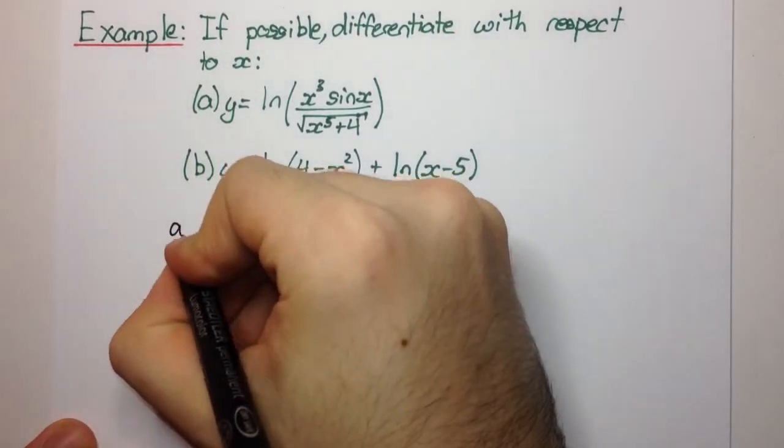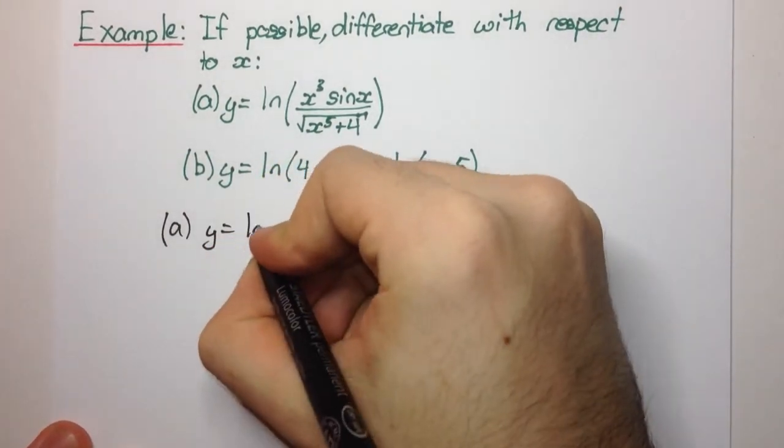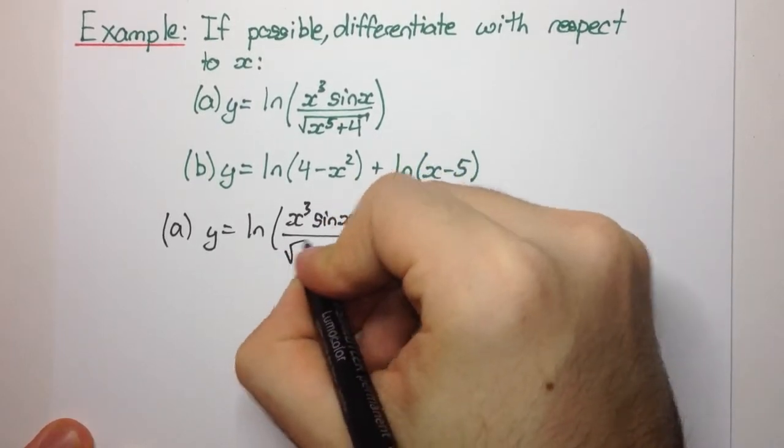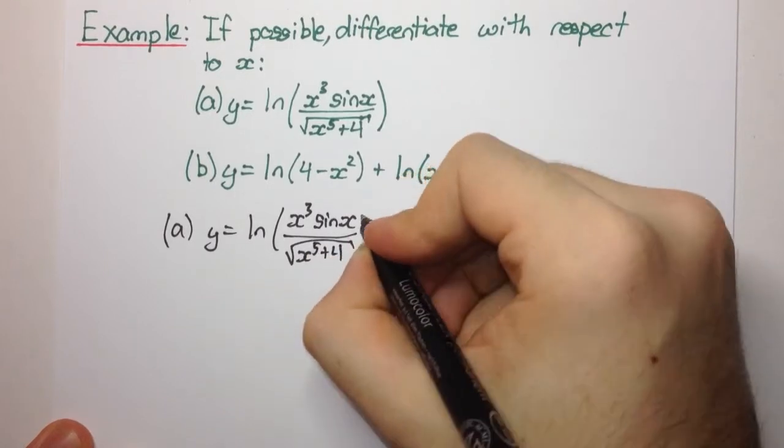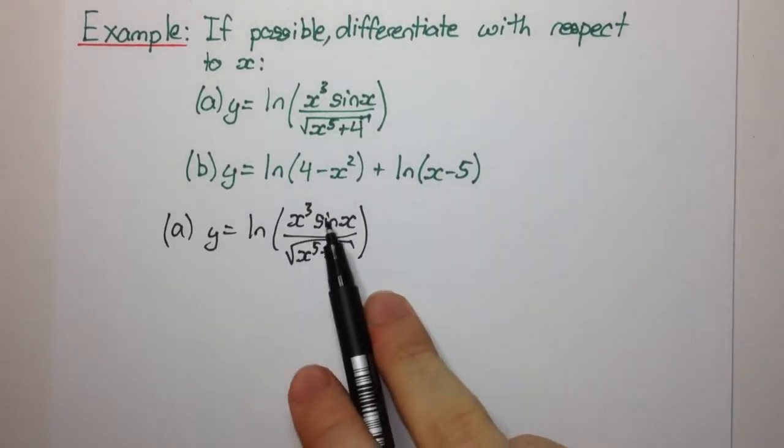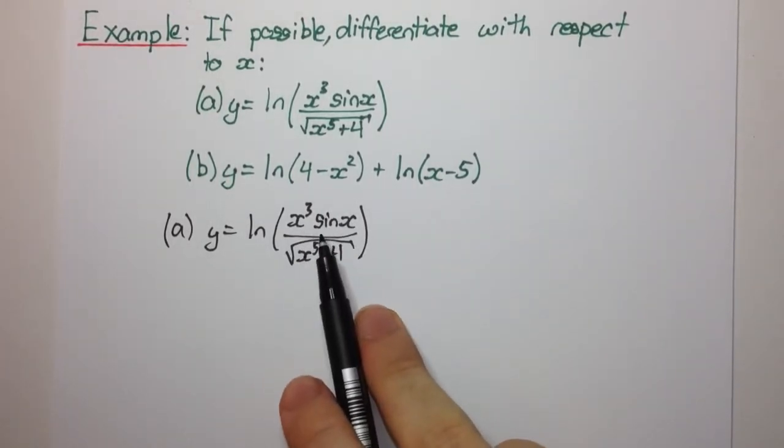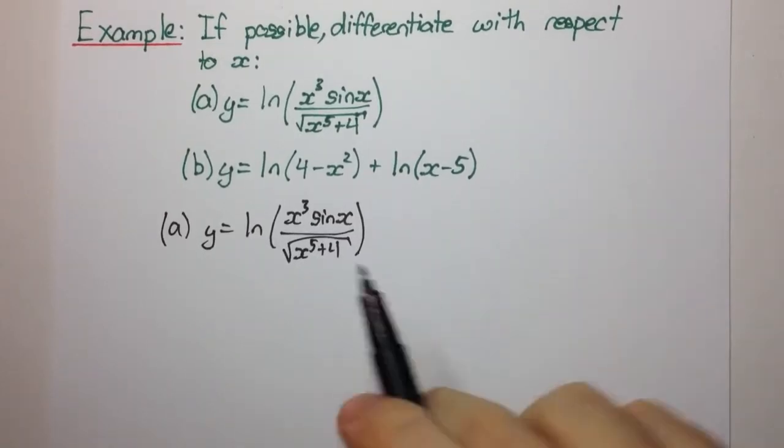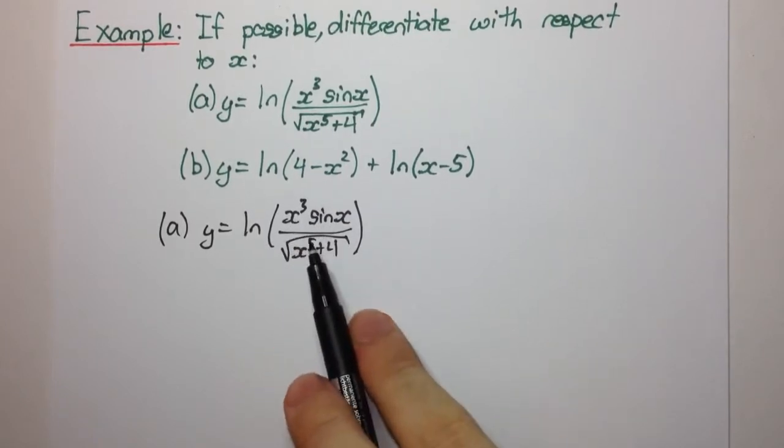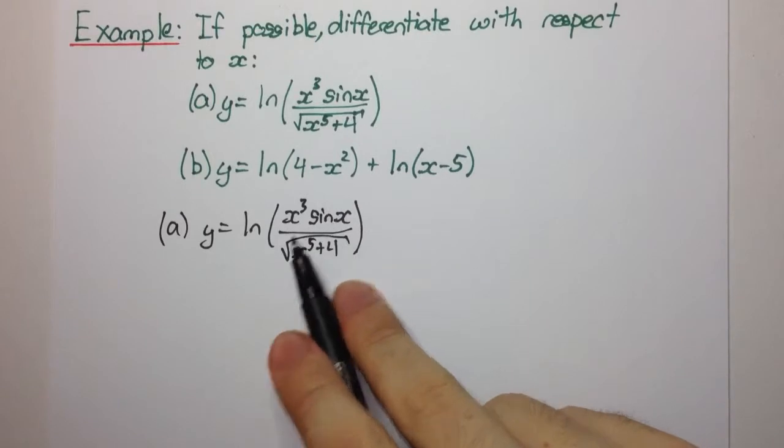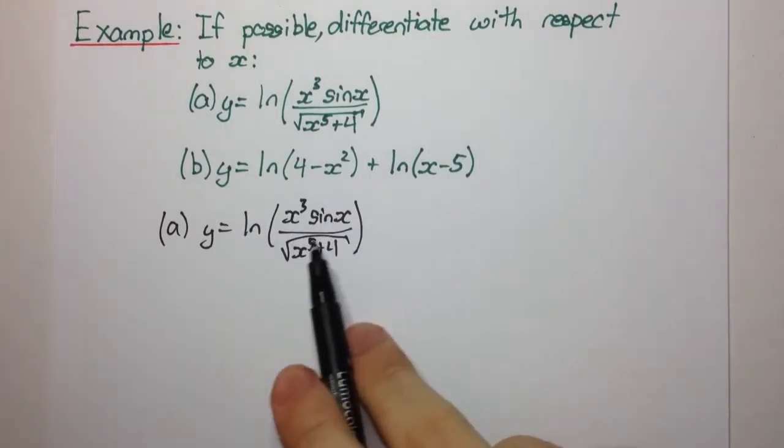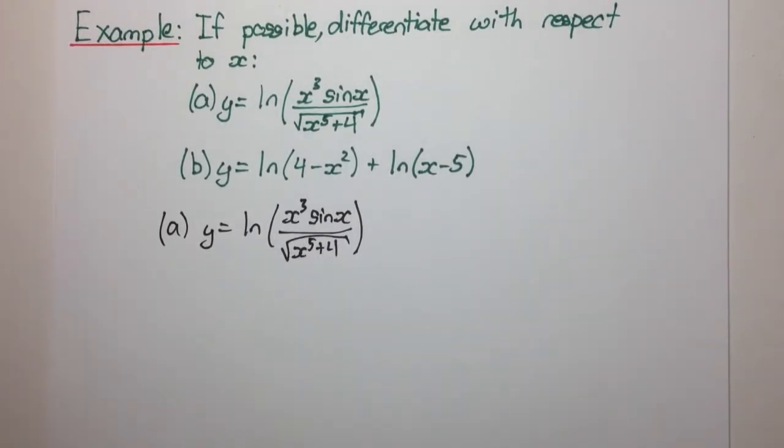How are we going to do this? Let's write down the function again: ln of x cubed times sine of x over the square root of x to the 5 plus 4. Now, when you differentiate a log, it's the derivative of what's inside divided by what was inside. But there is a simpler way because to find the derivative of this function here, it's quite complicated. It involves products and quotients. So if we look carefully, we can use some of our log laws to help us simplify this expression into something that's easily differentiated.